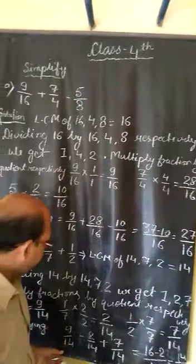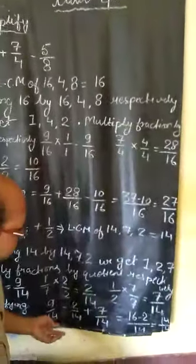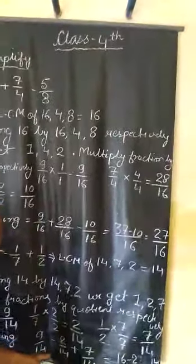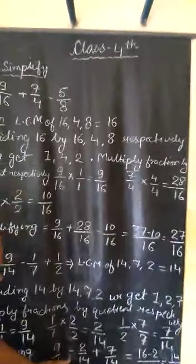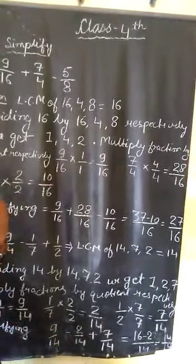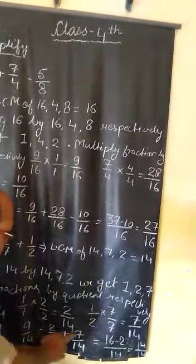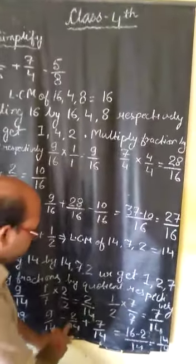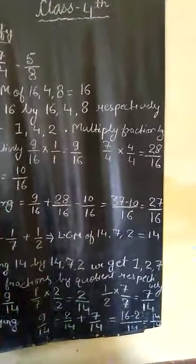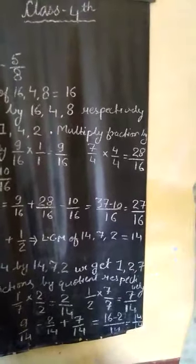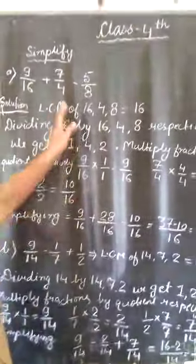After making like fractions, we can add the numbers easily because all denominators are the same. We simplify: 9 upon 14 minus 2 upon 14 plus 7 upon 14. Adding the positive numbers, 9 plus 7 gives 16. Then subtracting 2, we get 14 upon 14. Since numerator and denominator are the same, our answer is 1.